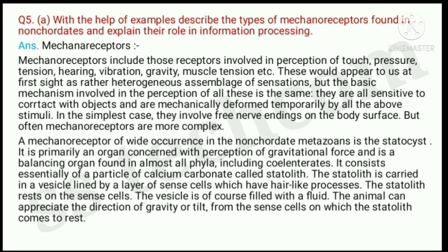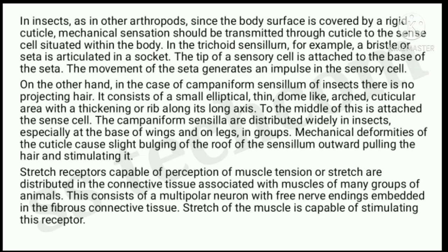Question number 5, A part: with the help of examples, describe the types of mechanoreceptors found in non-chordates and explain their role in information processing.